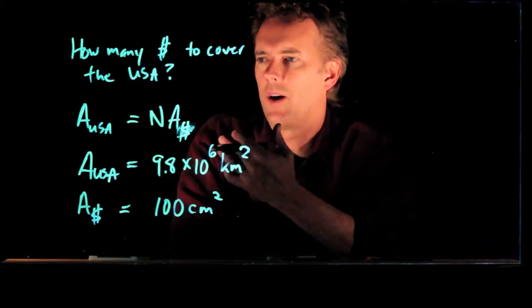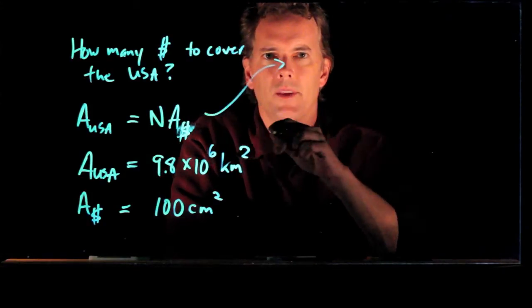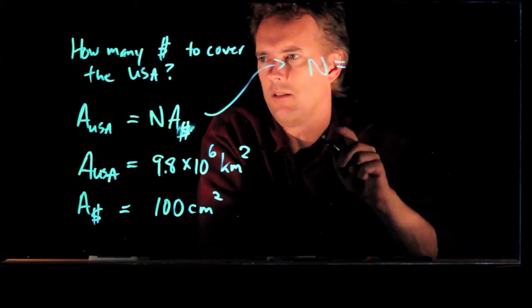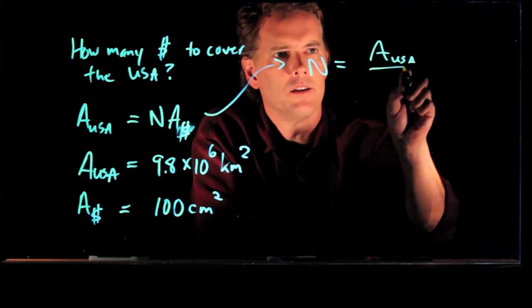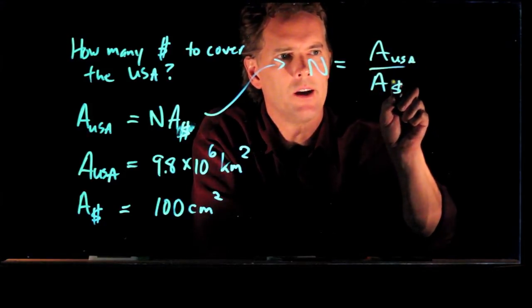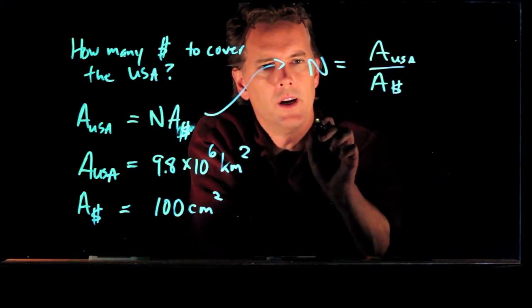Okay, so if you want to know how many it's going to take, we can just look at this equation right here, and we can say N is the area of the USA divided by the area of the dollar bill. Okay, and we know those numbers, right?